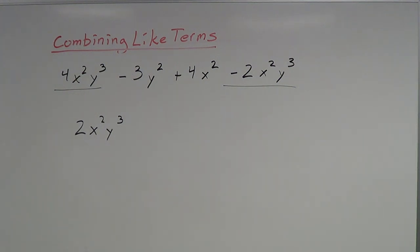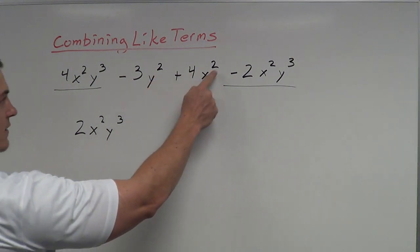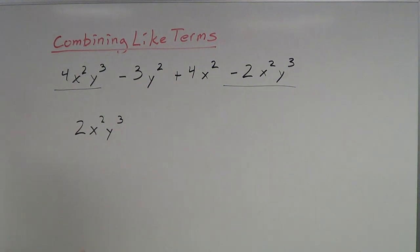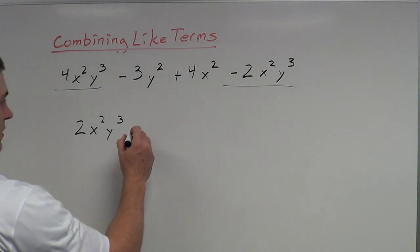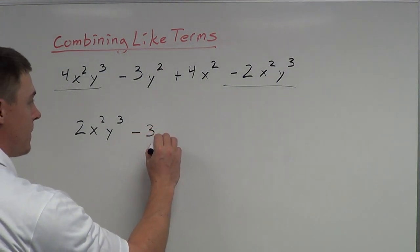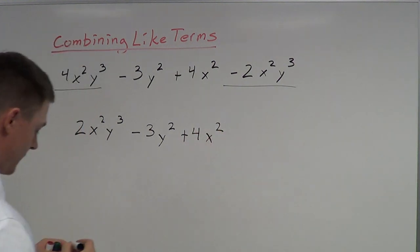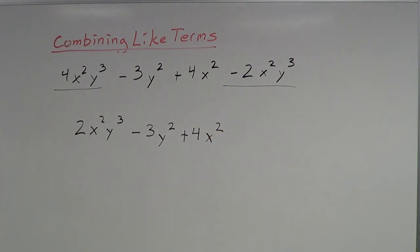And then looking at these ones, don't be confused. Yes, these have the same exponent, but the variables are different. So these two terms here in the middle are not alike. They are not the same. I cannot combine those. So what I'm going to do is just leave this as -3y² + 4x². That is my simplified answer. That's as good as it gets.